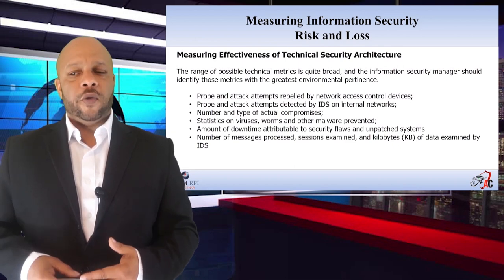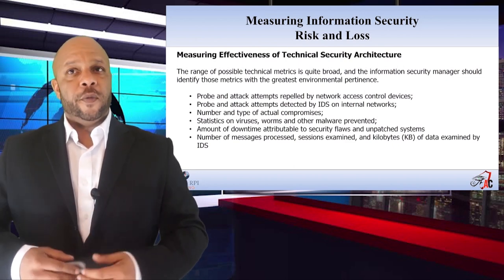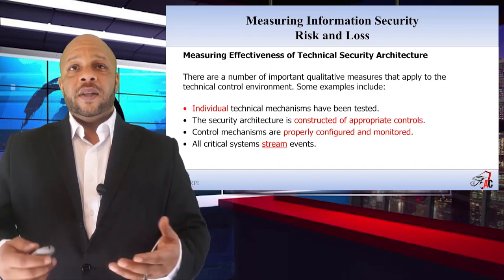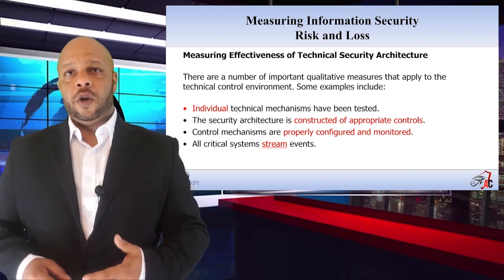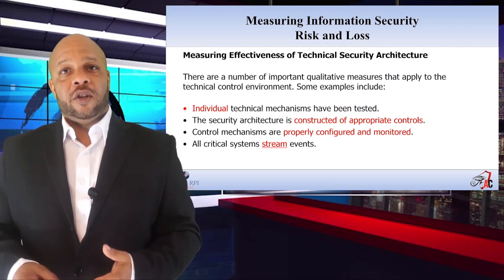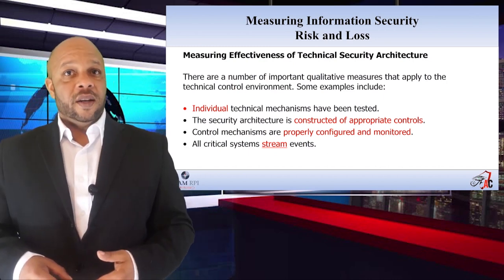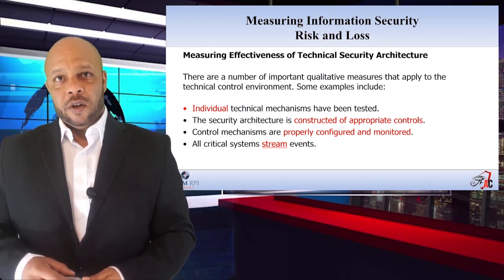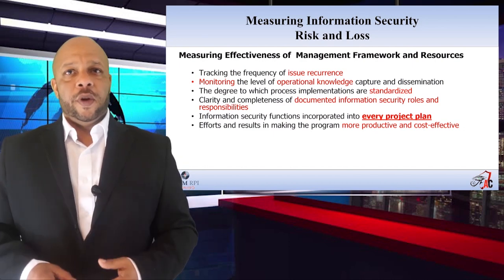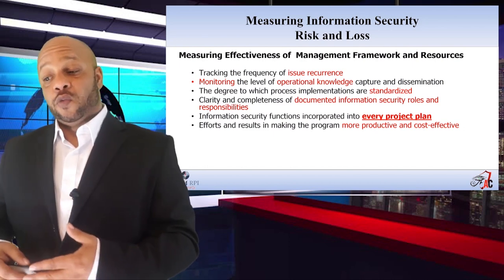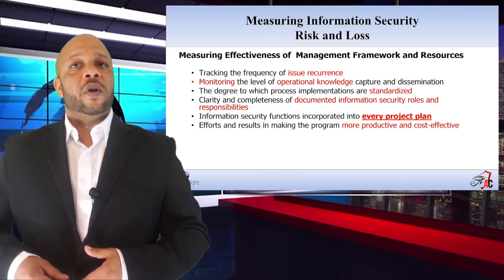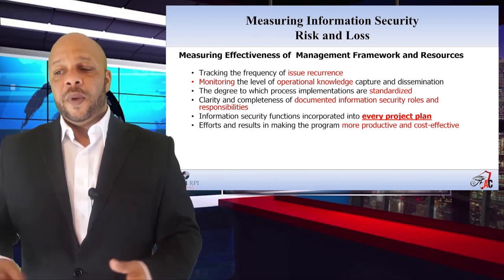As you can see, the range of possible metrics is quite broad. That's why it's important for the information security manager to choose the metrics most beneficial to the overall program. When measuring the effectiveness of a technical security architecture, you might look at individual technical mechanisms that have been tested, whether the architecture is constructed of appropriate controls, whether control mechanisms are properly configured and monitored, and ensuring all critical systems are streaming events for live action. When measuring the effectiveness of a management framework, you might track the frequency of issue reoccurrence and monitor the level of operational knowledge captured and disseminated across the organization.